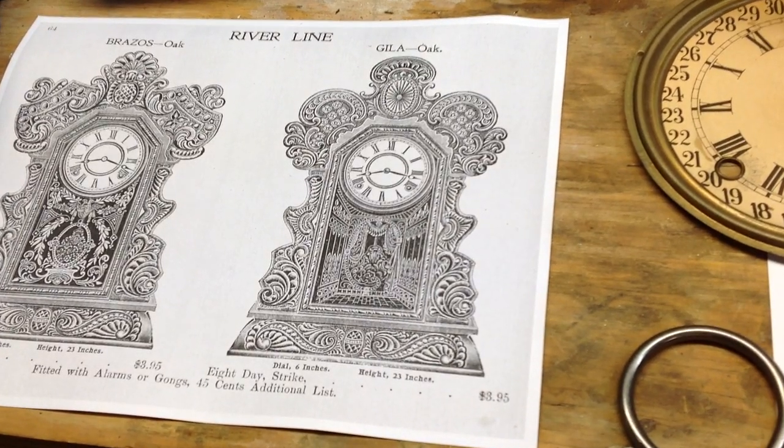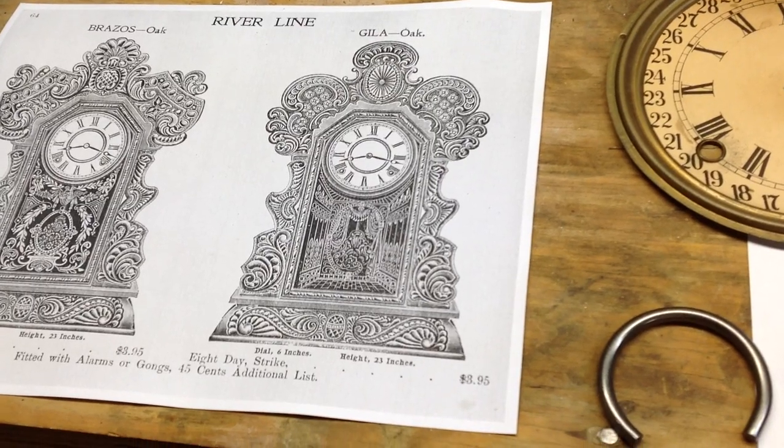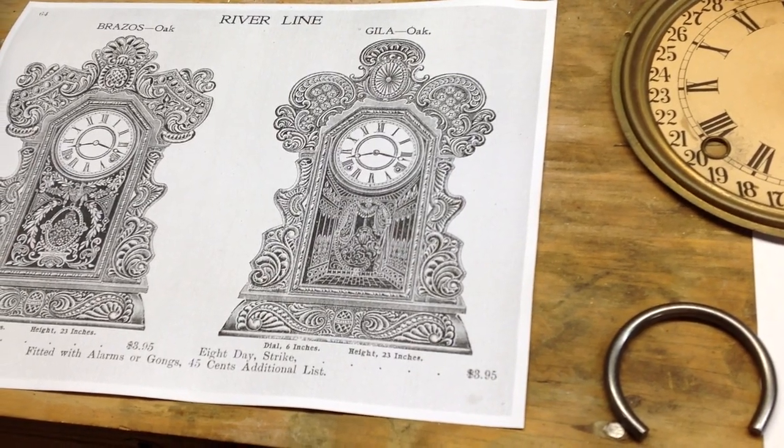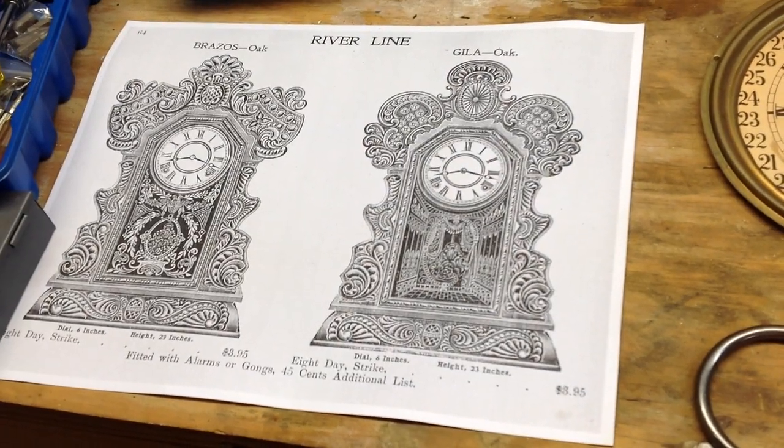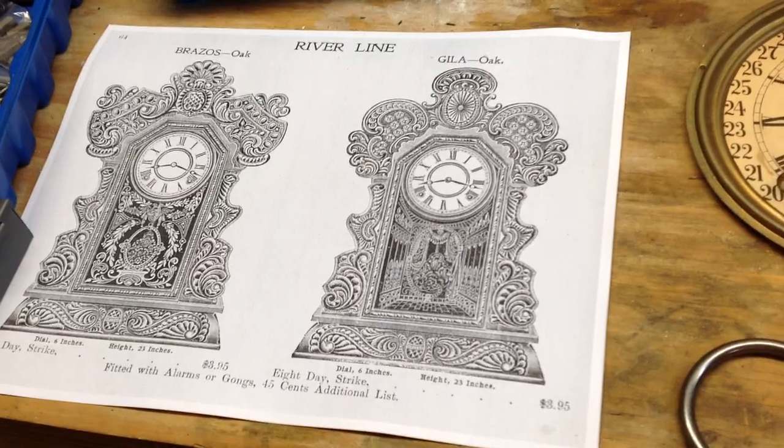The dial was 6 inches, height 23 inches, the original retail price of this clock was $3.95. And if you wanted alarms or gongs that was an additional $0.45.